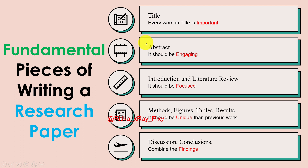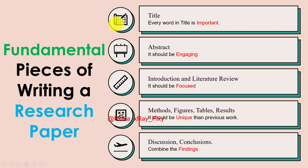The fundamental pieces for writing a research paper include: title, abstract, introduction, literature review, method, results, and conclusion. The title is critical — every single word in the title is important. It should make immediate sense to readers or referees because it reflects your research work, giving readers a hint about what the paper is all about.